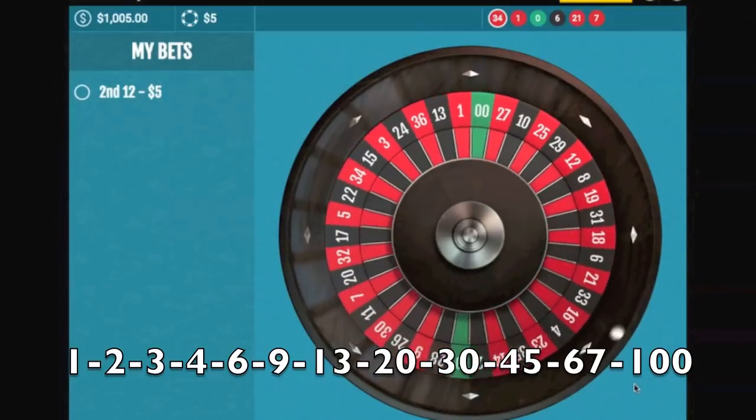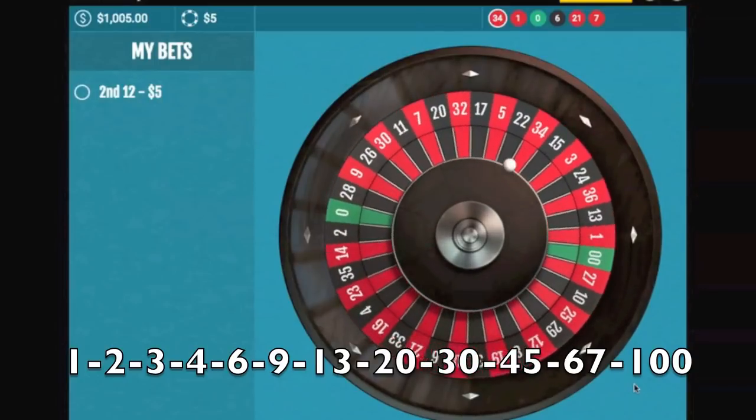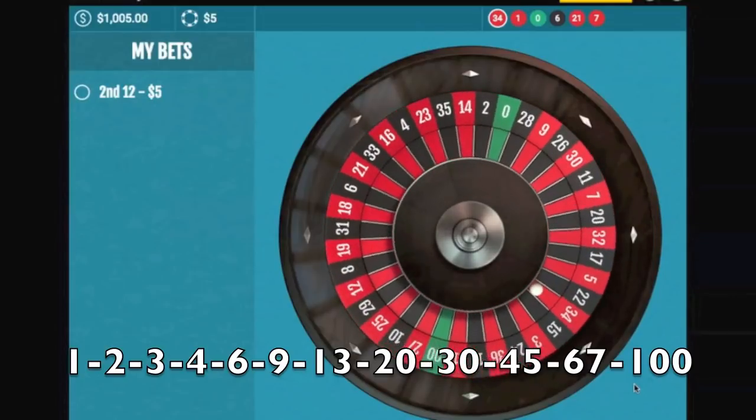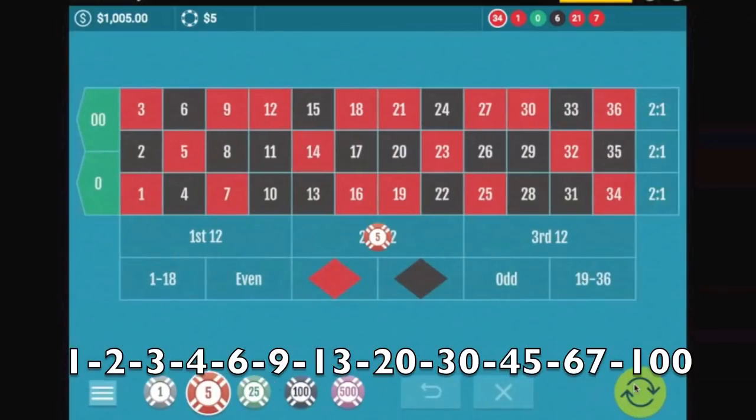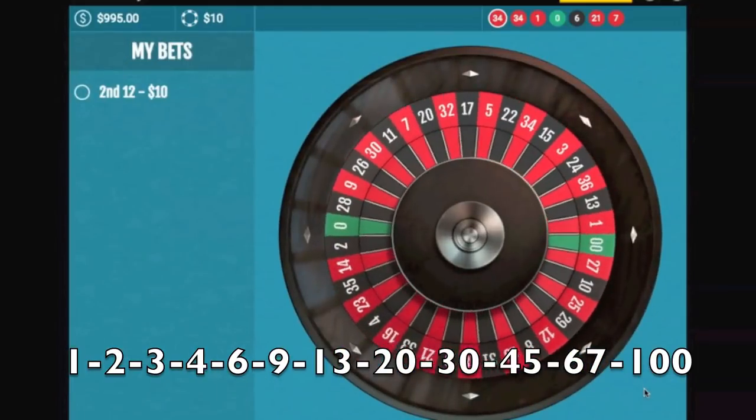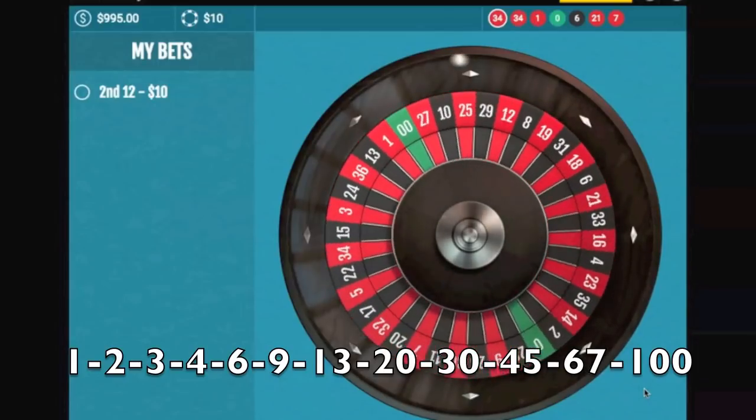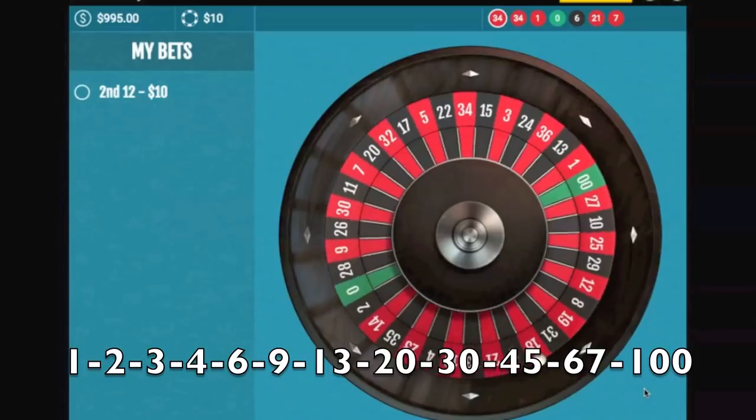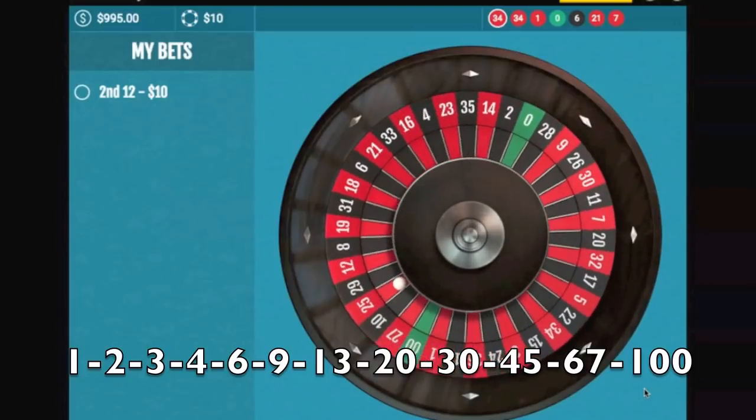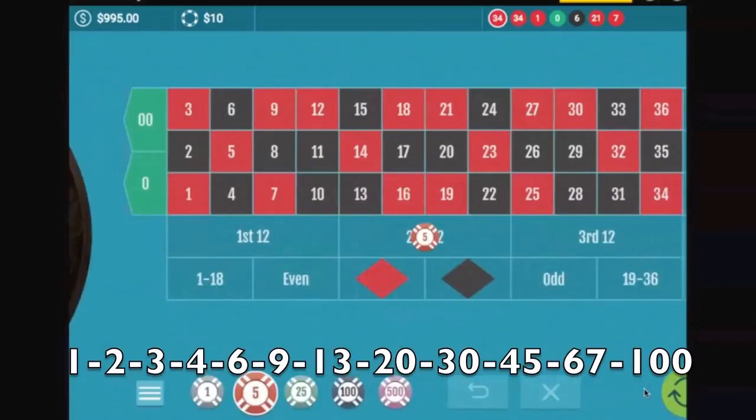That results in a 25, landing back on that original dozen, so it would have paid to stay there, but you never know that until after you roll. So fifteen's the next bet. Here she goes.